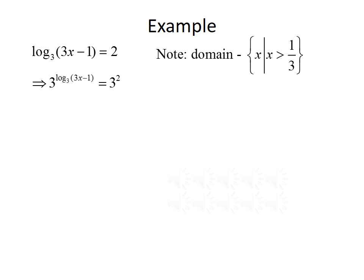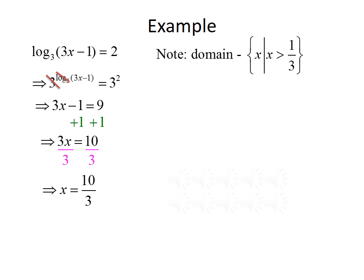We can cancel the logarithm by using an exponential with a base of 3 on both sides. So, 3 raised to the log base 3 of (3x minus 1) equals 3 squared. The 3 and the log base 3 on the left-hand side cancel each other out since they are inverses, leaving us with 3x minus 1 equals 9. We add 1 to both sides giving us 3x equals 10, then divide both sides by 3, giving us x equals 10-thirds.